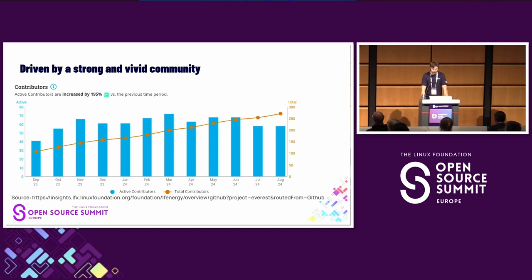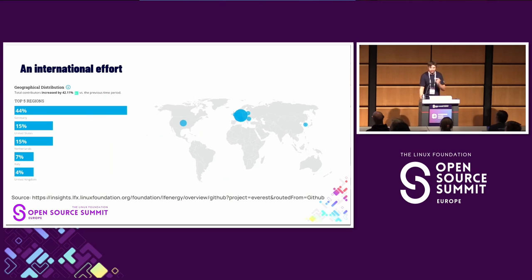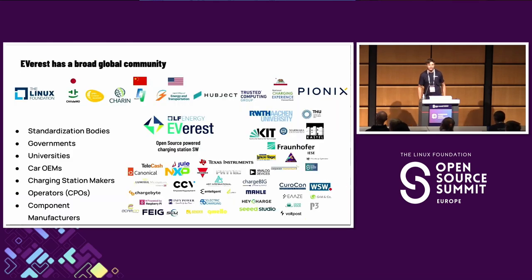Everest is driven by a good community. You can see in orange the line of total contributors, which is still growing — we are about 250 at the moment. In blue you see the current active contributors; for last month, August, it was 58, and not all of them are from Pionics. The contributors are located mainly in Germany, probably because Pionics is based there, but we also have contributors from the United States, the United Kingdom, Italy, and the Netherlands. Typical contributors are standardization bodies, governments, universities, car OEMs, and even more.